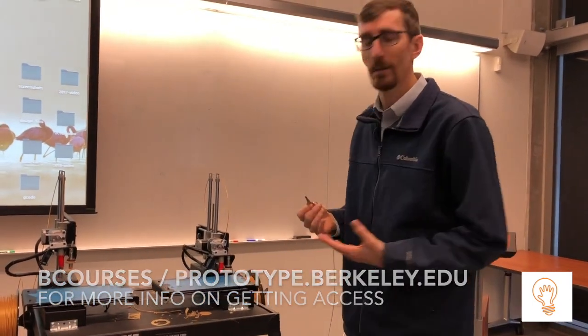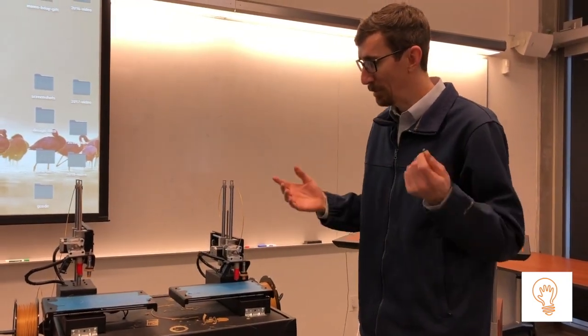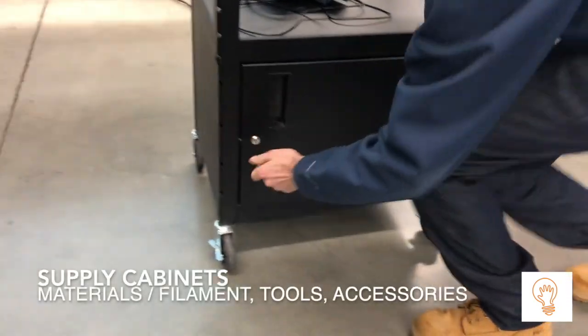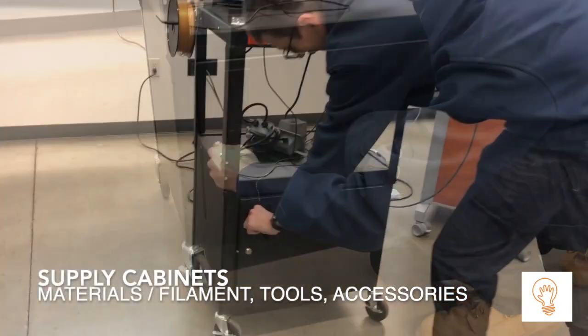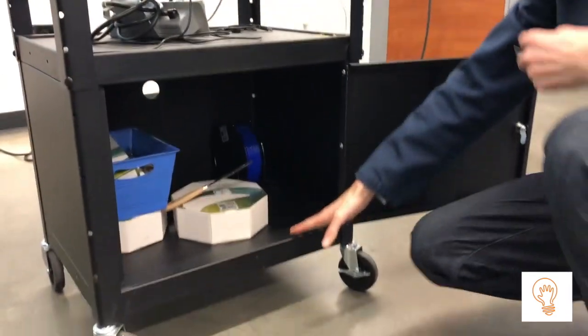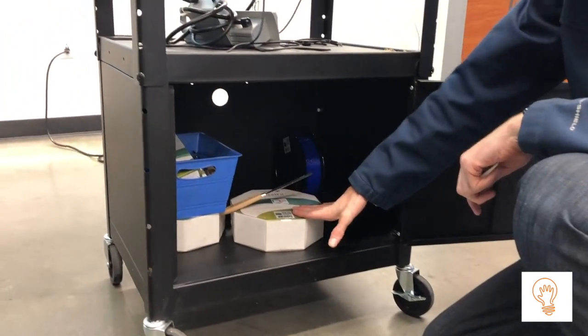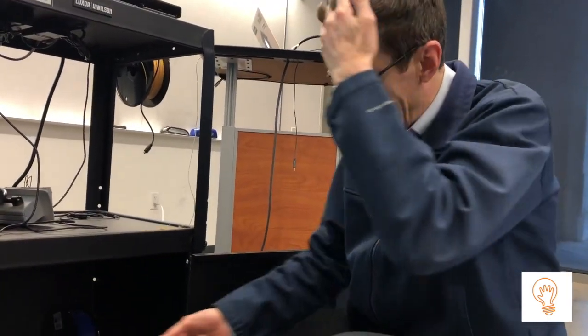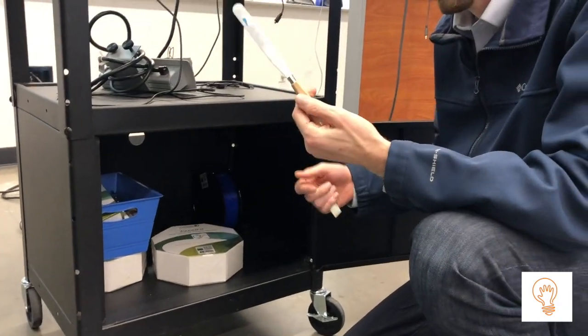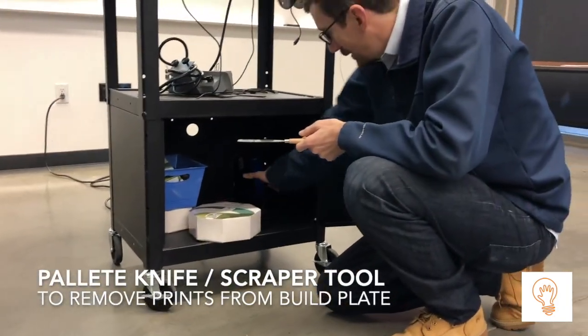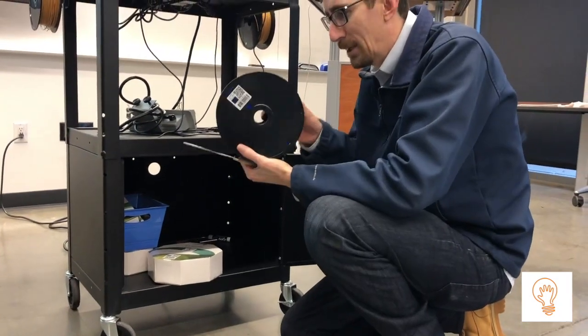You can email me or find the location on bCourses to keep it used just by hands-on rapid prototyping students. When you unlock this cabinet you'll find some key supplies. Not all supply cabinets are created equal and they have varying amounts of supplies.